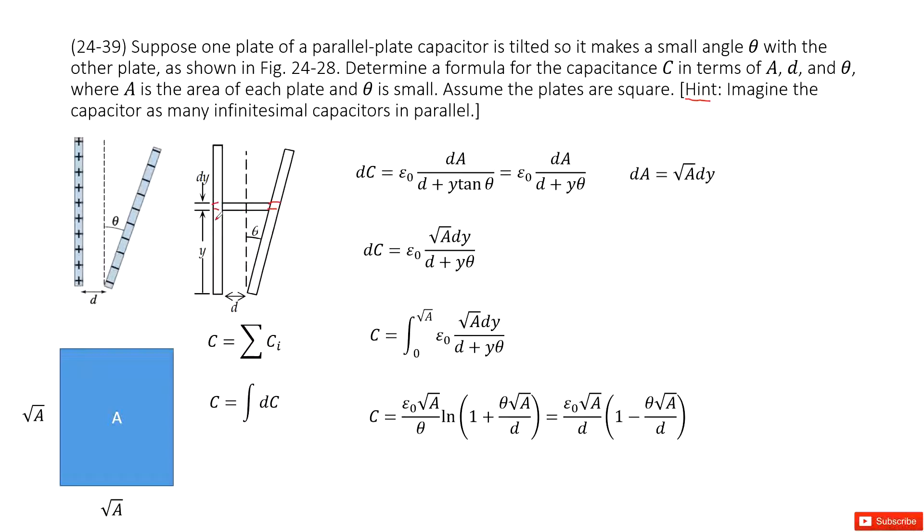This small fraction, we can consider it is a parallel connection. Keyword there: parallel. So for parallel connection, if we want to find the equivalent capacitance, we always add all these small fractions together for each section.